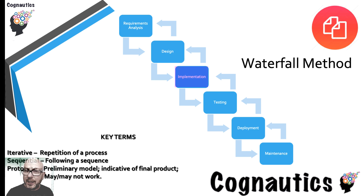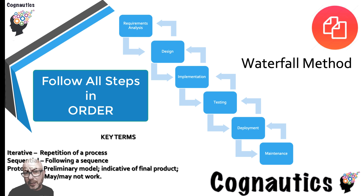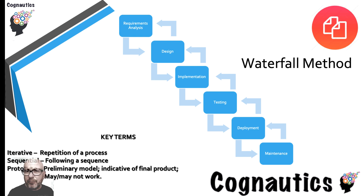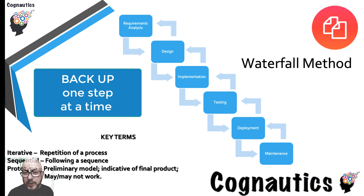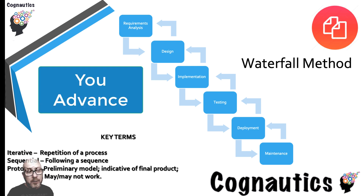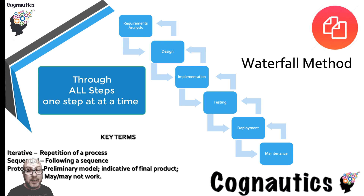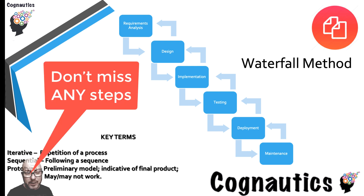You flow down the steps one by one until you get to the bottom — those are the same steps we talked about in previous videos. What makes this methodology different is, first, that you follow all the steps in order, which is logical. But the second key idea is that if there's an issue, you go back up one step — or as many steps as you like. However, when you come back down, you have to go down the steps in order. You can't miss any steps out.